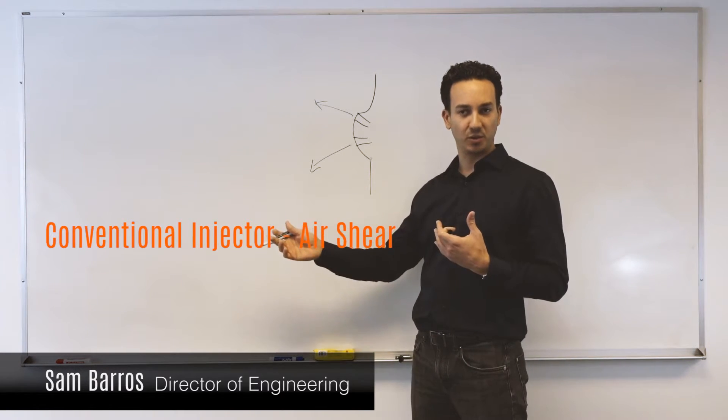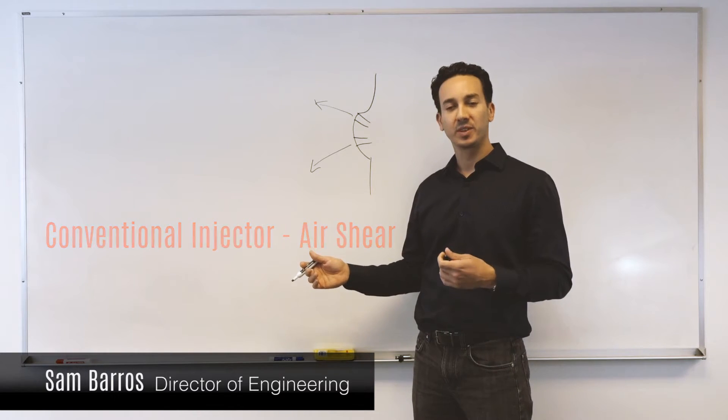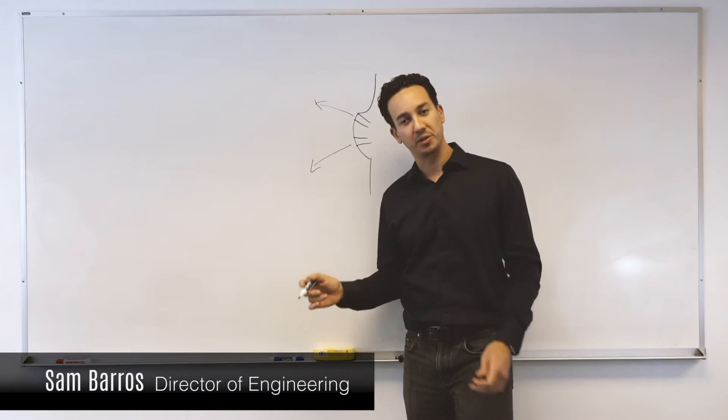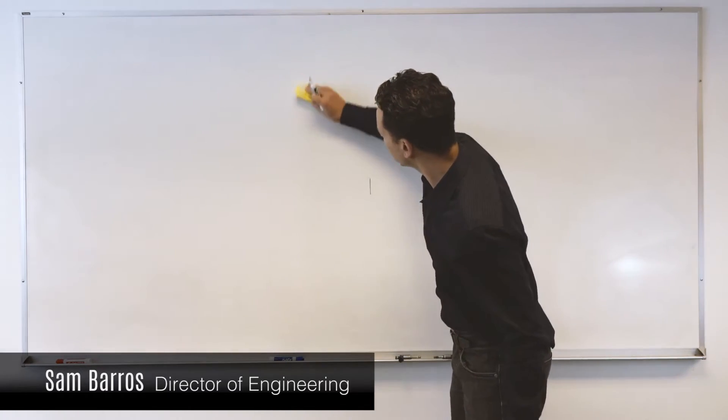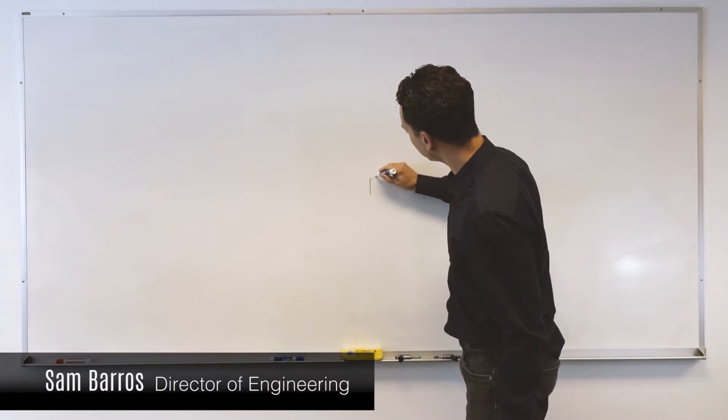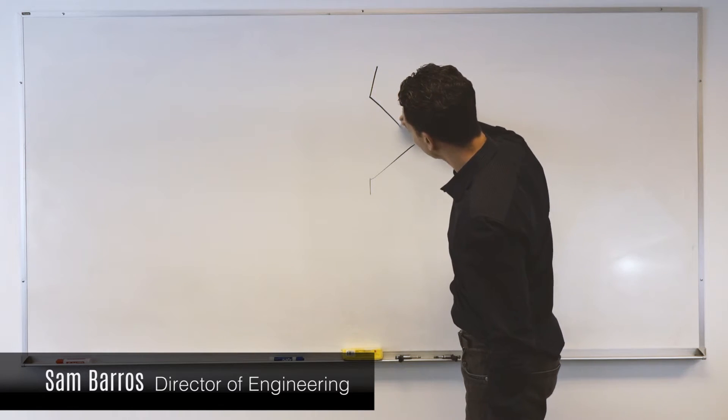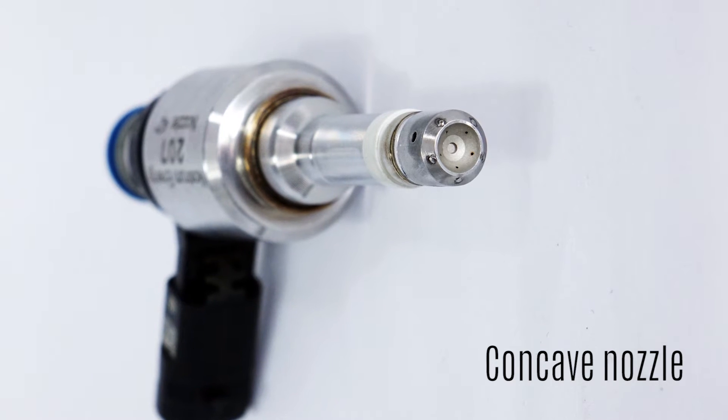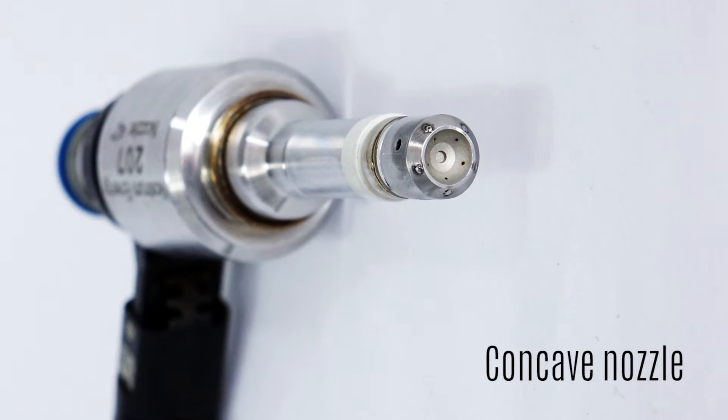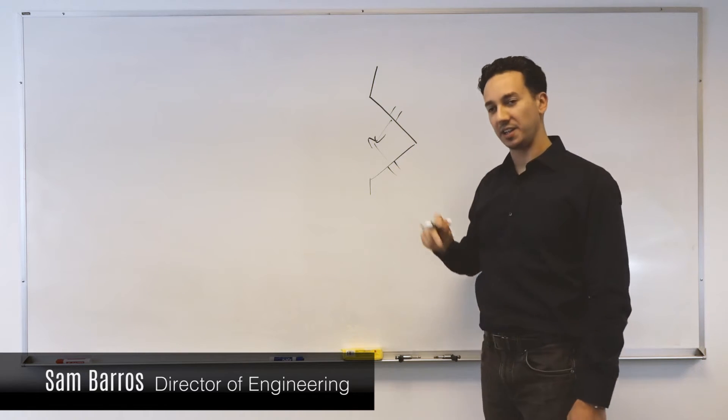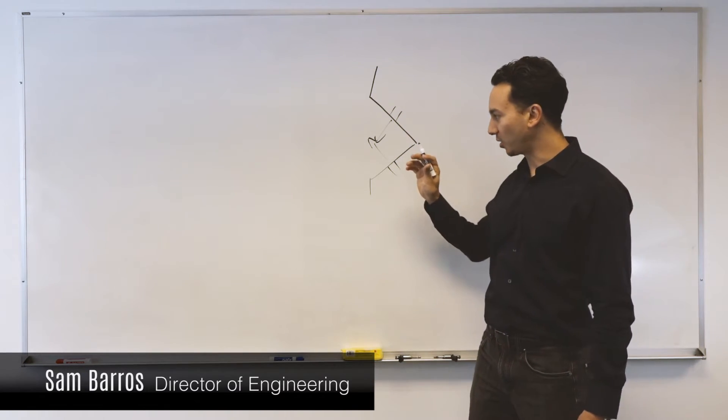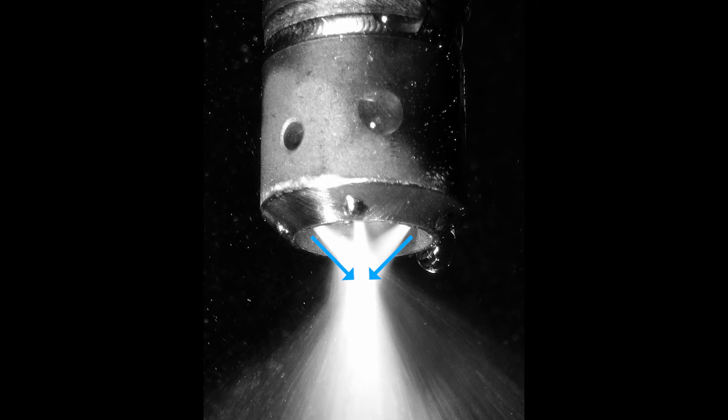This requires a certain distance in order for the jets to break up. What is intrinsically different about the KDI fuel injector is now, we have turned these jets towards one another and as the jets exit, they collide just a few millimeters from the nozzle surface.